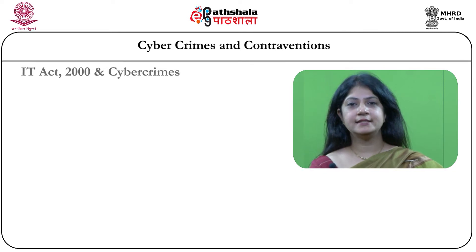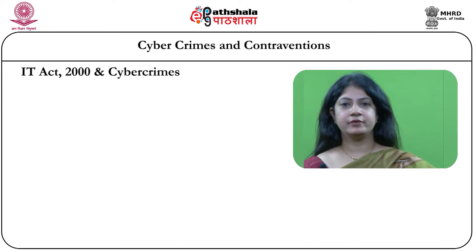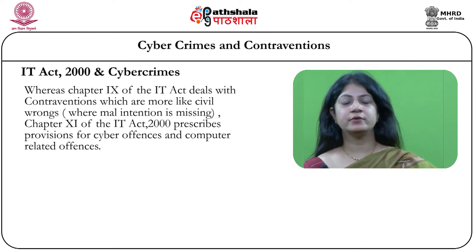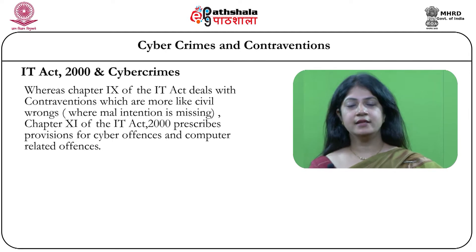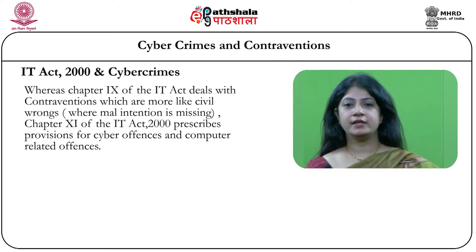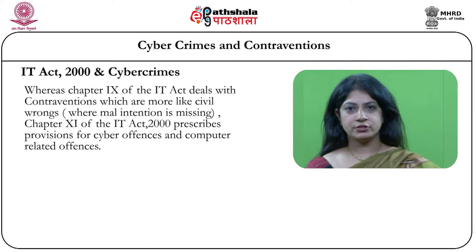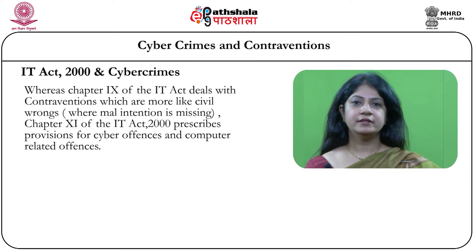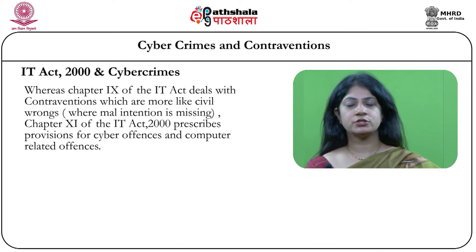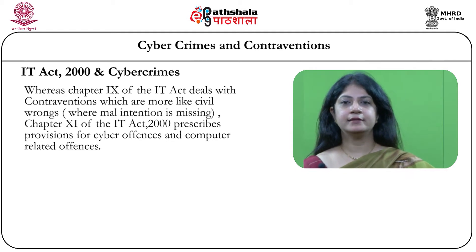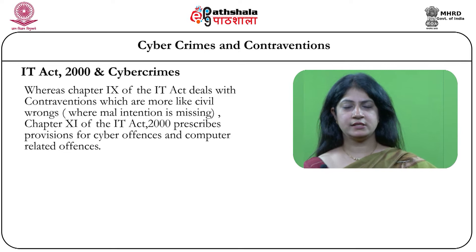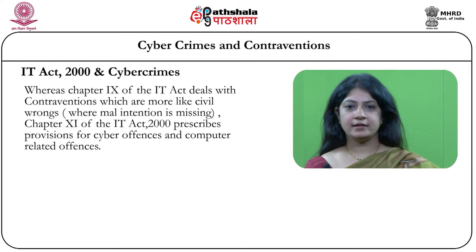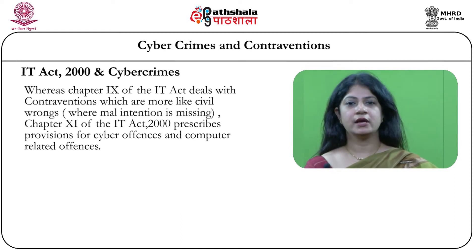Now let us have a look at the IT act. Chapter 9 of the IT act talks about civil wrongs which are contraventions, and cyber crime is covered by chapter 11 of the IT act. The key difference is that where there is malicious intention, cyber crime gets involved. Wherever there is no malicious intention but perhaps negligence which causes an act that results in a loss to someone, and entitles the victim to seek compensation, that falls under chapter 9 of the IT act.